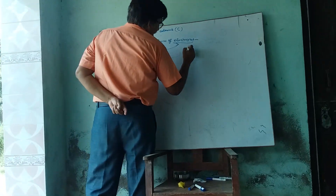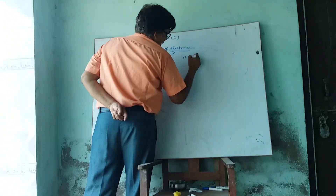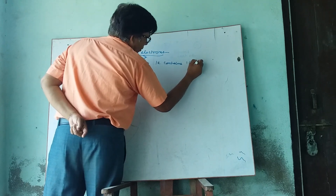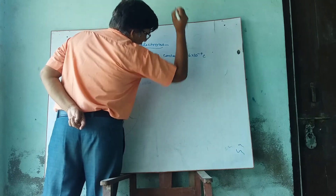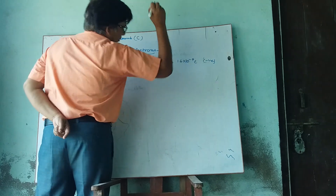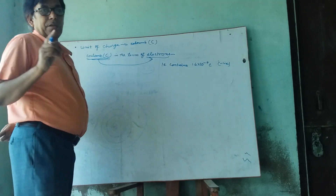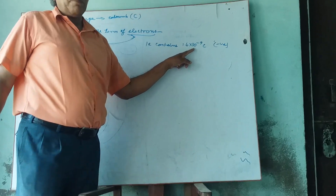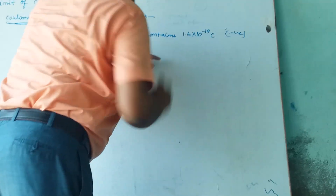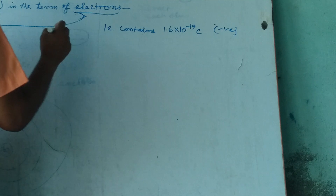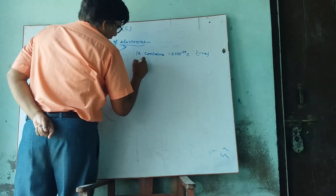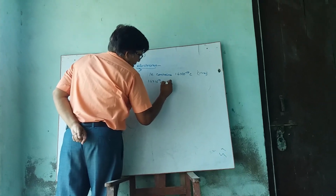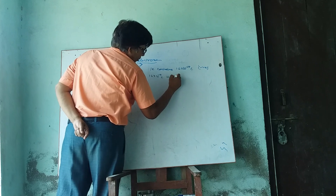Suppose we know that one electron contains 1.6 into 10 to the power minus 19 Coulomb of negative charge. This means that 1.6 into 10 to the power minus 19 Coulomb is equivalent to 1 electron.